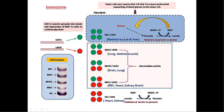LDH, lactate dehydrogenase, is the perfect example of an isoenzyme. Lactate dehydrogenase has two types of genes: gene A and gene B. Lactate dehydrogenase is a tetramer having two subunits, or two genes, gene A and B. The regulation of enzymatic activity is done by the relative amount of gene A and B, giving different combinations. LDH5 has only gene A with no gene B, and is present in skeletal muscles and liver. LDH5 catalyzes the conversion of pyruvate to lactate in glycolysis.